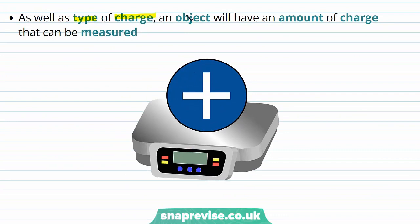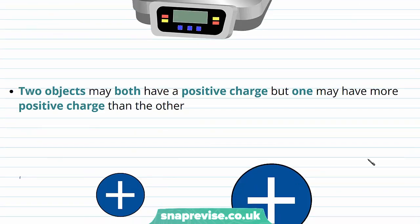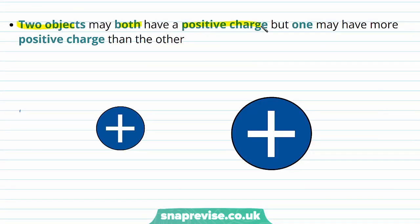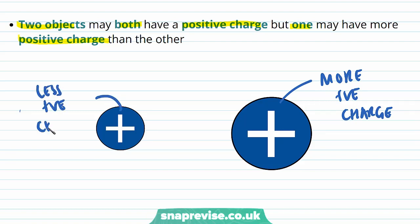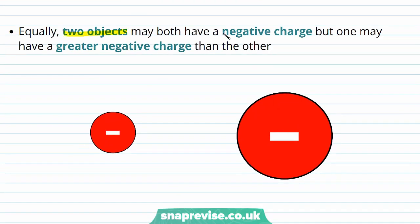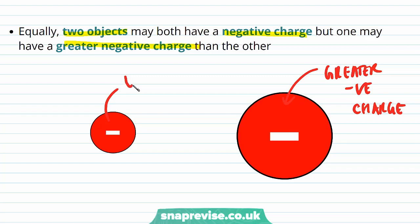As well as the type of charge, an object will have an amount of charge that can be measured. The amount of charge possessed by this object can be measured in a similar way that we can measure the mass of an object. Two objects may both have a positive charge, but one may have more positive charge than the other. So this one on the right has more positive charge than the object on the left, and we can quantify this difference by measuring it. Equally, two objects may both have a negative charge, but one may have a greater negative charge than the other, and again we can quantify this difference by measuring it.